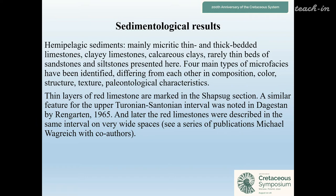Thin layers of red limestone are marked in the Shapsuk section. A similar feature for the upper Turonian-Santonian interval was noted in the Dagestan area by Rengarten, and later the red limestones were described in the same interval over a very wide area. See a series of publications by Mikhail Bagraevsk with co-authors.